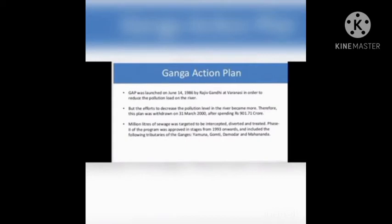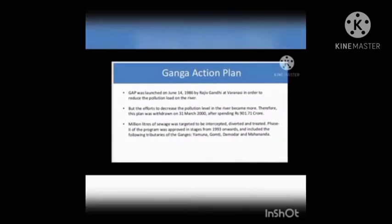Phase 2 of the program was approved from 1993 onwards and included rivers Ganga, Yamuna, Gomti, Damodar and Mahananda.